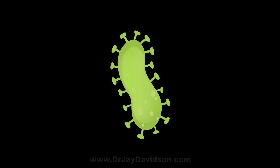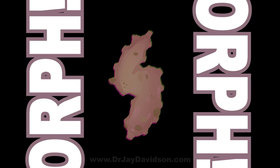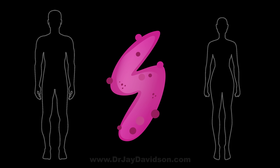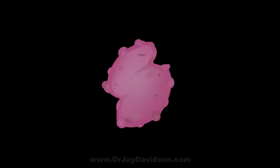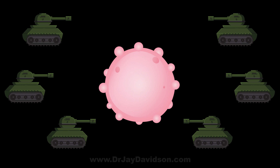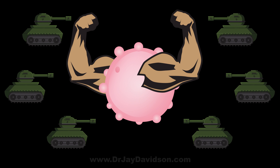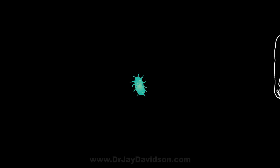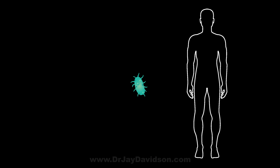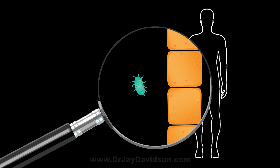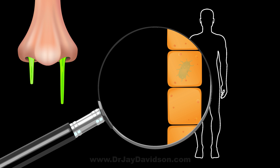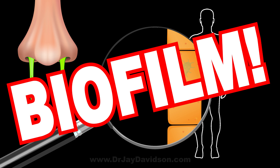Lyme disease has different forms, meaning it can morph. It has a spiral-shaped form which likes to drill into joints and tissues. When it gets attacked, it can morph into an army tank protective form called the round body or cyst. It has a super secret spy form called the intracellular form, which goes inside our cells and pretends to be our own cells. And it can make slime and snot, which is called biofilm.